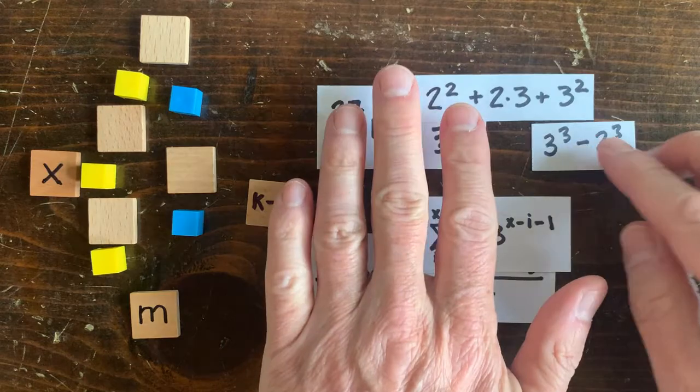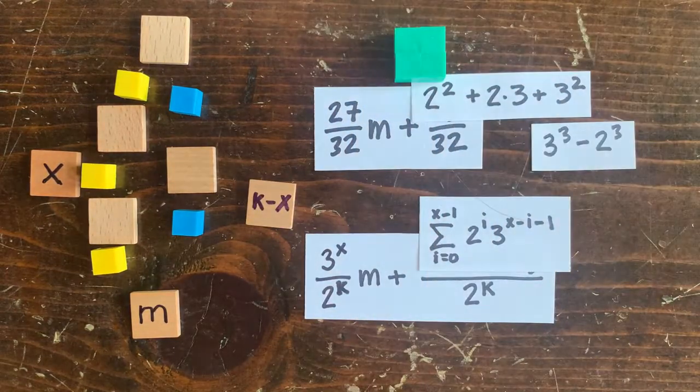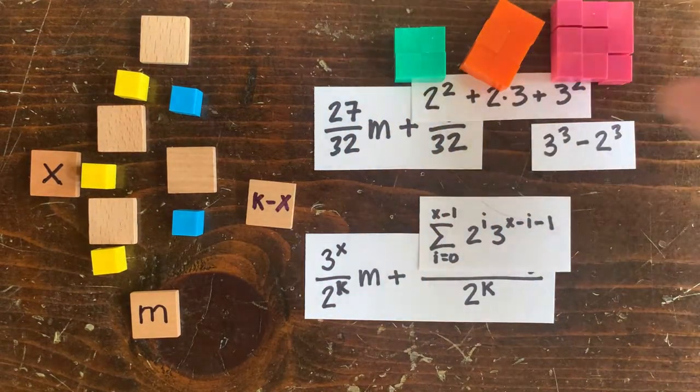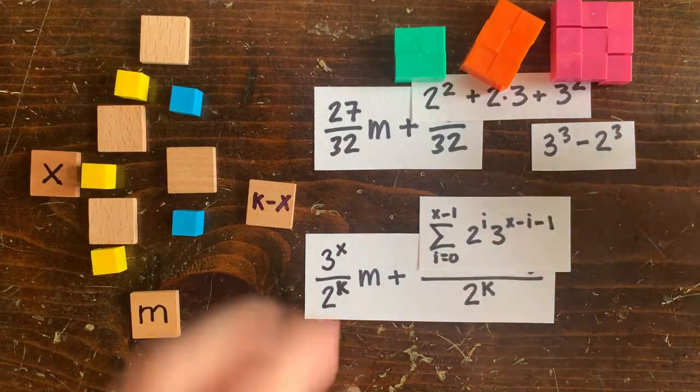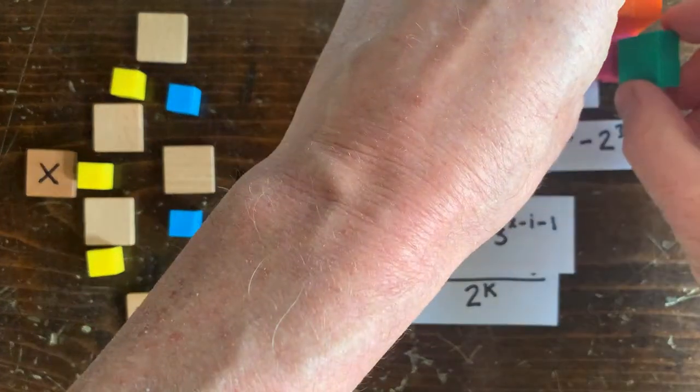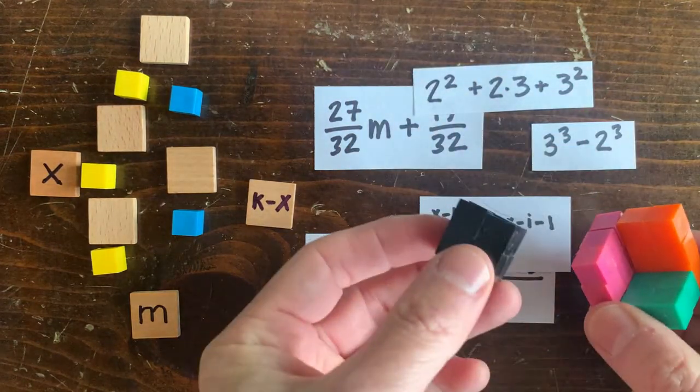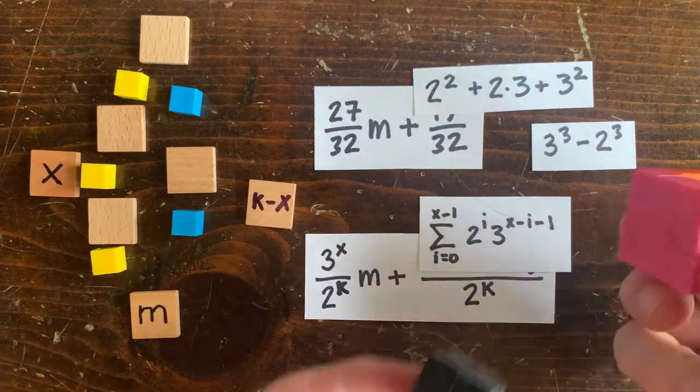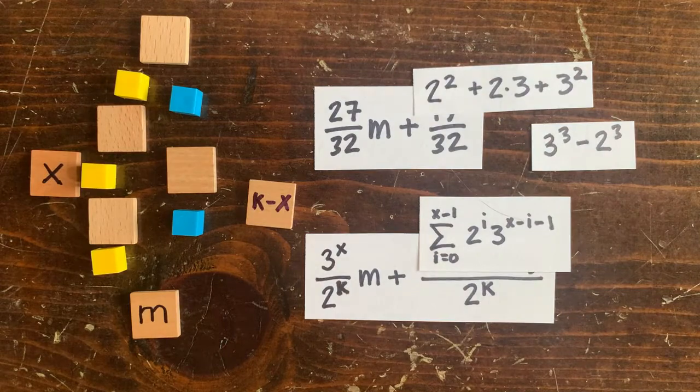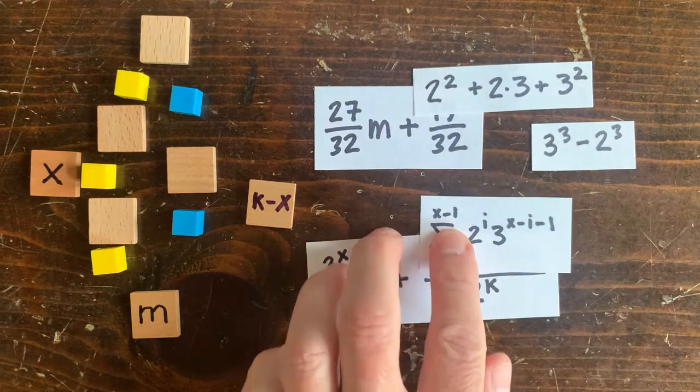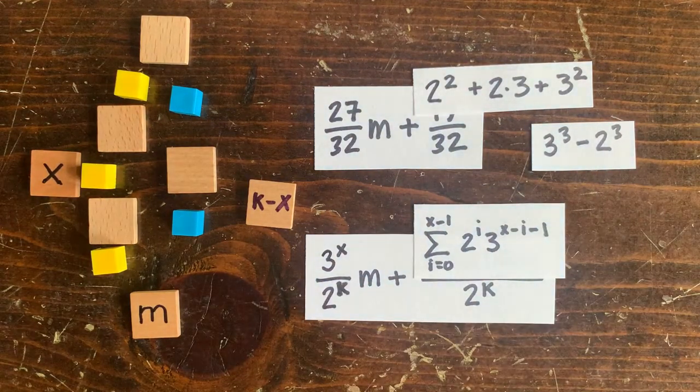For example, here's 2 squared. Here's 2 times 3. And here's 3 squared. If we put those together, we've got 3 cubed minus 2 cubed. Either way, it's 19 blocks. And then if we solve for m, the bottom of the circuit is m equals 3 to the x minus 2 to the x over 2 to the k minus 3 to the x.